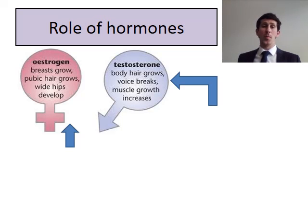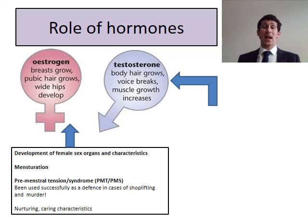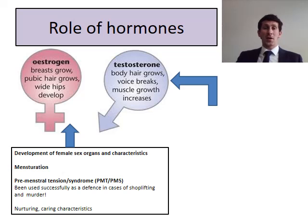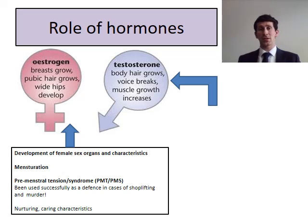You need to know about oestrogen, testosterone, and oxytocin. Oestrogen is the female sex hormone — responsible for breast growth, pubic hair, wide hips developing, female sex characteristics, and the development of female sex organs. It also starts the menstruation process, and is the reason for premenstrual tension (PMT) and premenstrual syndrome (PMS). PMS and PMT have actually been successfully used in legal defences for cases such as shoplifting and even murder. Oestrogen is also linked to nurturing and caring characteristics in females.